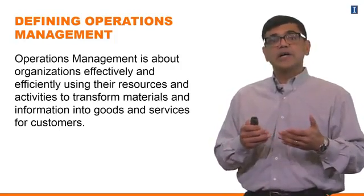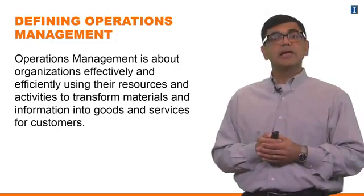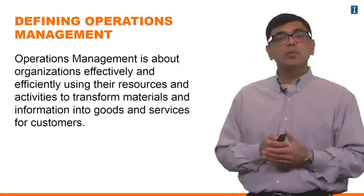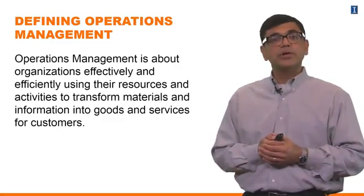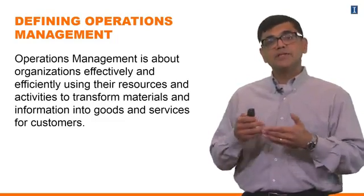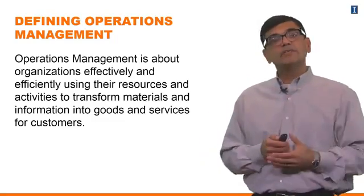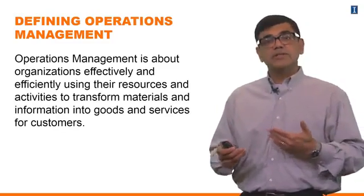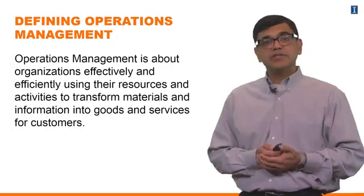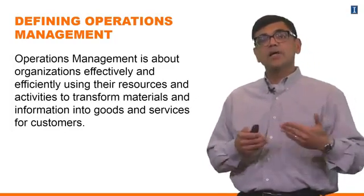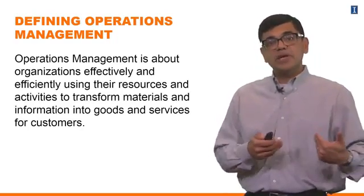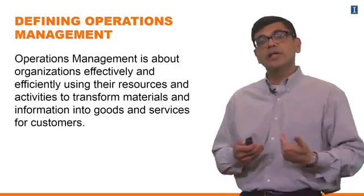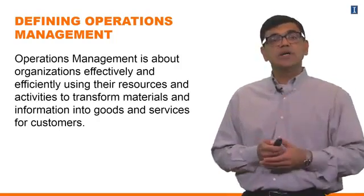Continuing on with the definition, operations management is made up of resources and activities. There are going to be resources — the location of the plant, the facilities needed to make things — and there are going to be activities within the process where you have to do things to either make something or deliver a service. It also has to transform material and information, taking inputs of materials and information and performing value-added transformation, converting them into goods and services that customers are going to use.